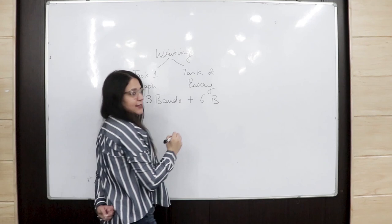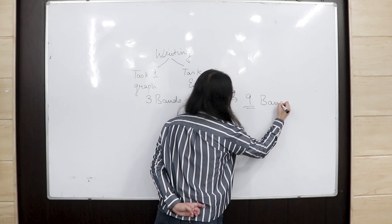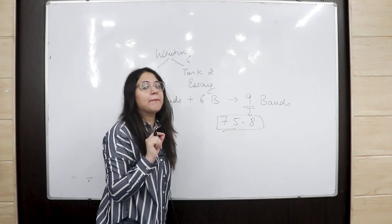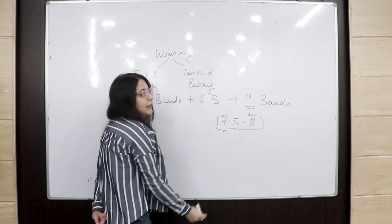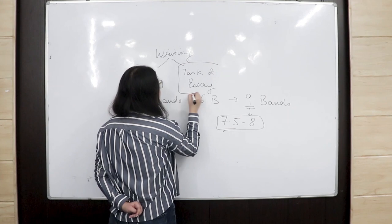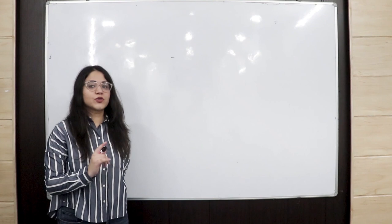Task 1 is calculated out of three bands whereas Task 2 is calculated out of six bands, so total writing comes out to nine bands. Unfortunately, the maximum we can score in writing is 7.5 to 8 bands. Today I am going to discuss Task 2 with you, and in my coming videos I will discuss Task 1.